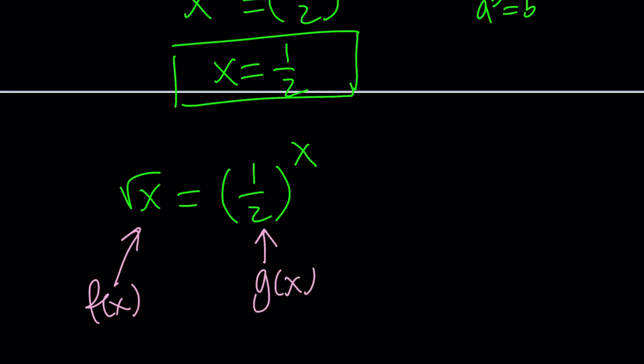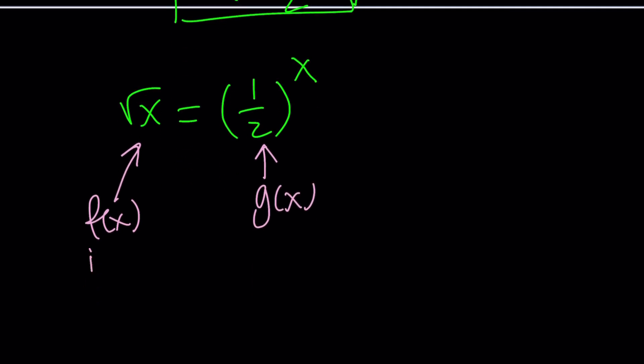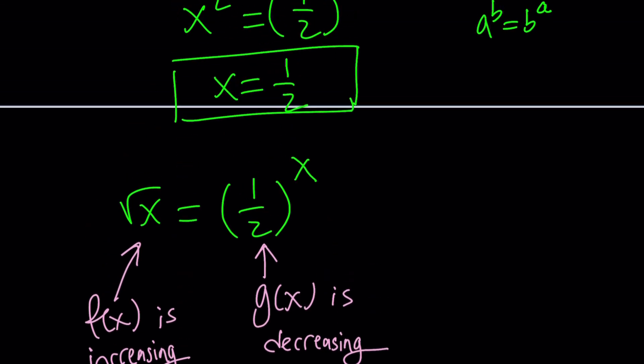Notice that f of x is the square root function and it's increasing. Why? The larger numbers have larger square roots. Obviously, this is not true for negative numbers, but wait a minute. Do negative numbers have square roots? No, not in the real world. And the right hand side, you have a function that is decreasing. Why? It's exponential with a base between 0 and 1. Uh-oh. A decreasing and an increasing function can only intersect at a single point. Therefore, there is only one solution and that happens to be x equals 1 half.